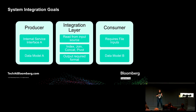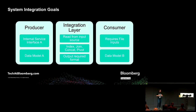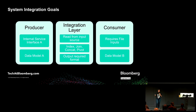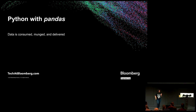We built an integration layer using Python and Pandas for consuming the data, munging it, and delivering it. The integration layer would take inputs from the producer, apply indexing, joins, and concatenations, output the required format, and send it to multiple consumer applications — sometimes pivoted — in whatever form each application needed.